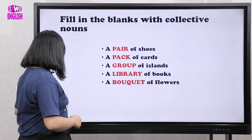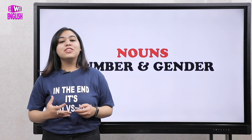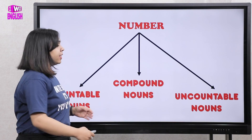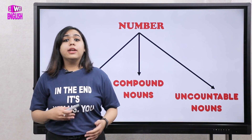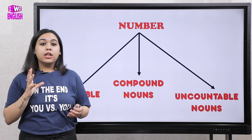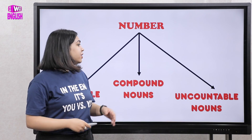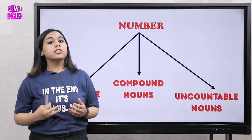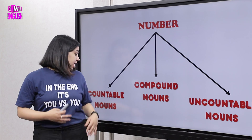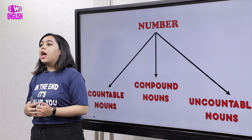Today we'll be moving on to our new topic — number and gender of nouns. Whenever we talk about number, it means something that you can count. Numbers are categorized into three main categories: countable nouns, compound nouns, and uncountable nouns.